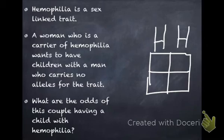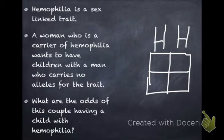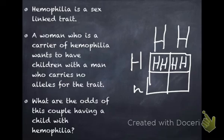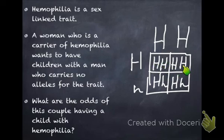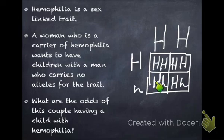Working it out incorrectly as a normal Mendelian trait: I'd draw a standard Punnett square and put dad's genes on top. Since hemophilia would be recessive, we'd call it little h, and dad carries no alleles for the trait so he's big H big H. Mom is a carrier, so she's big H little h. When we work out all possible combinations, every child either gets two dominant alleles, or one dominant and one recessive — in all four cases the dominant allele masks the recessive, so no child would show hemophilia.